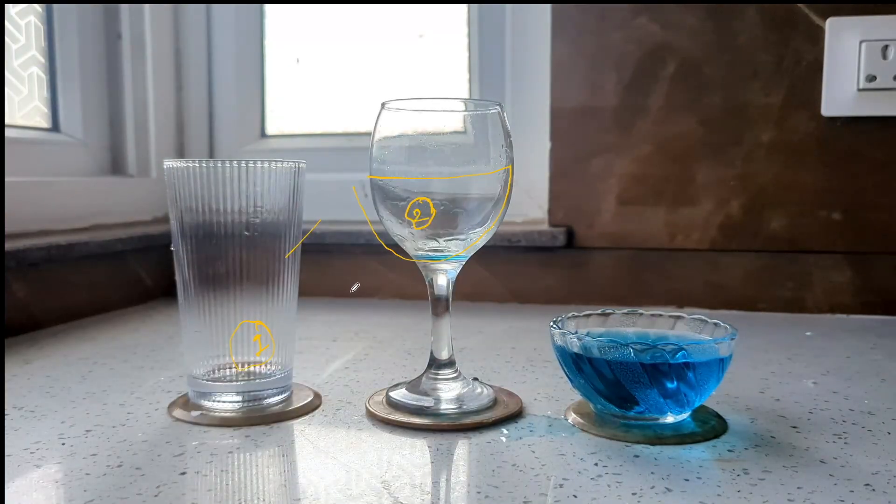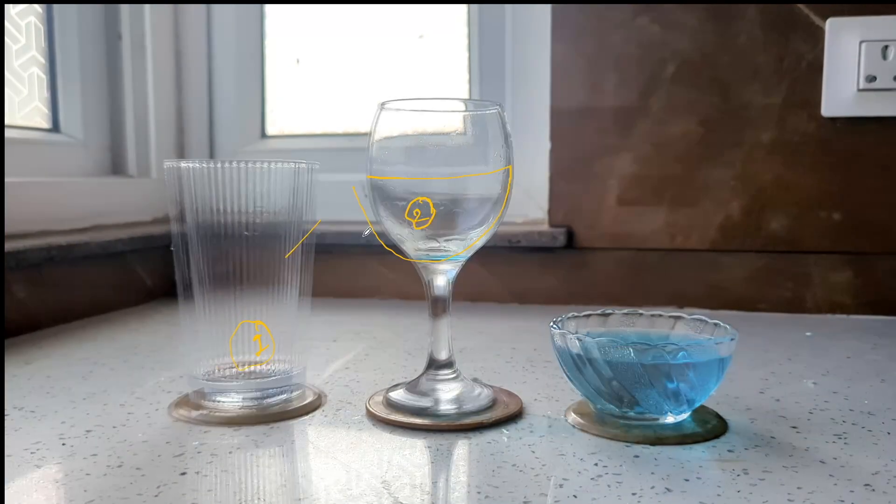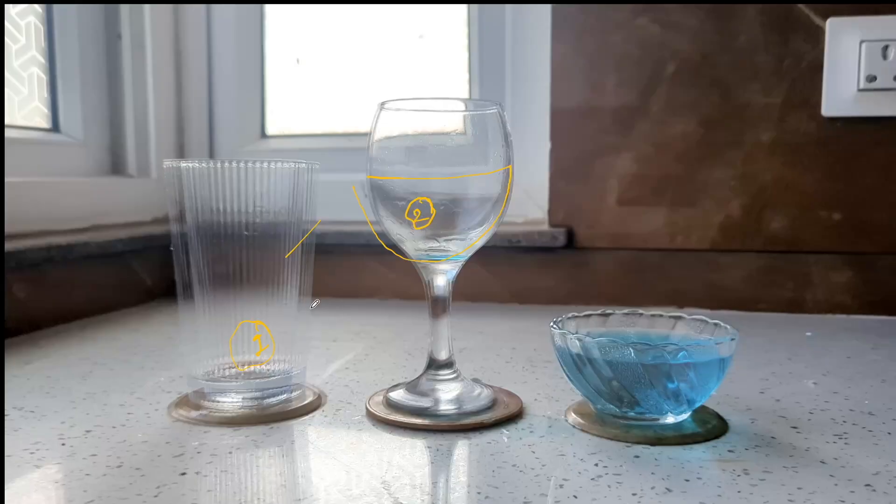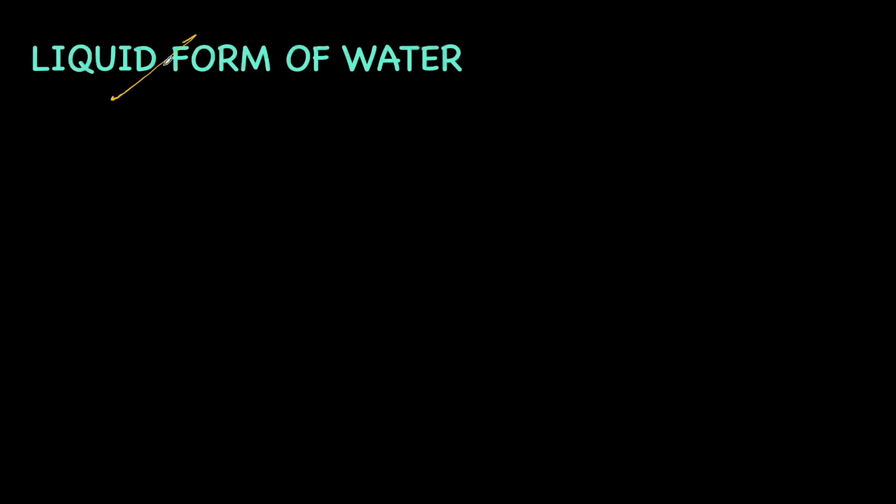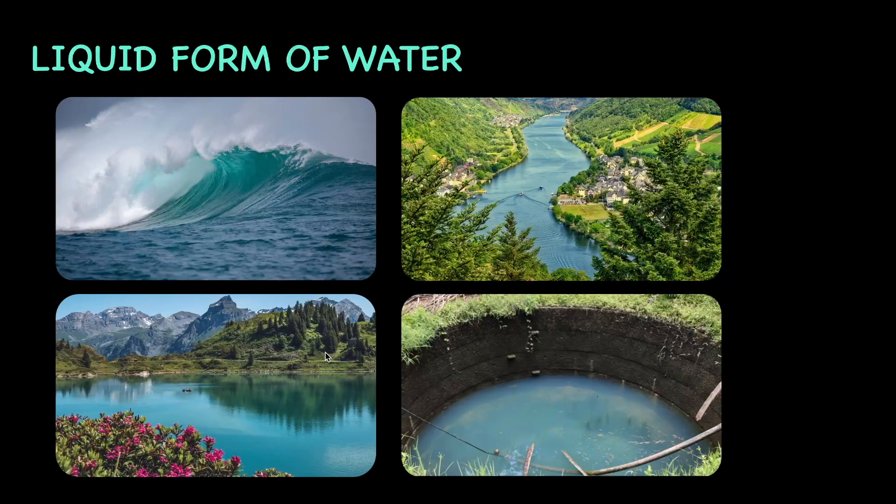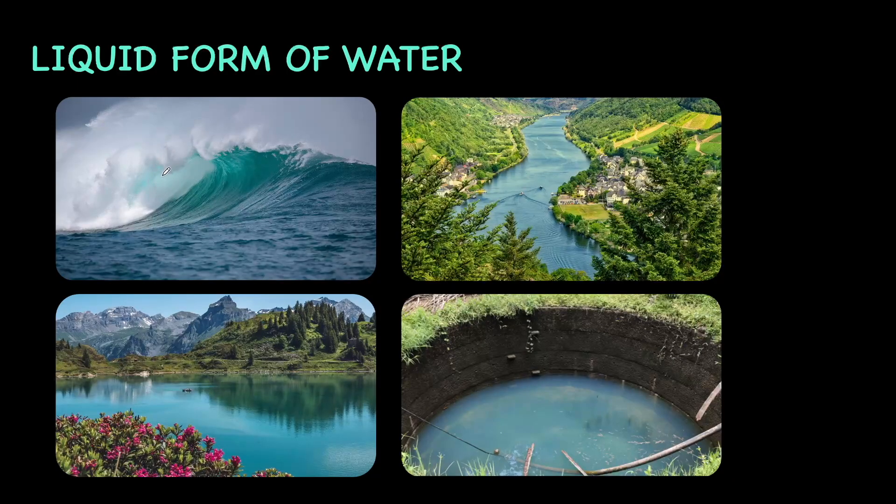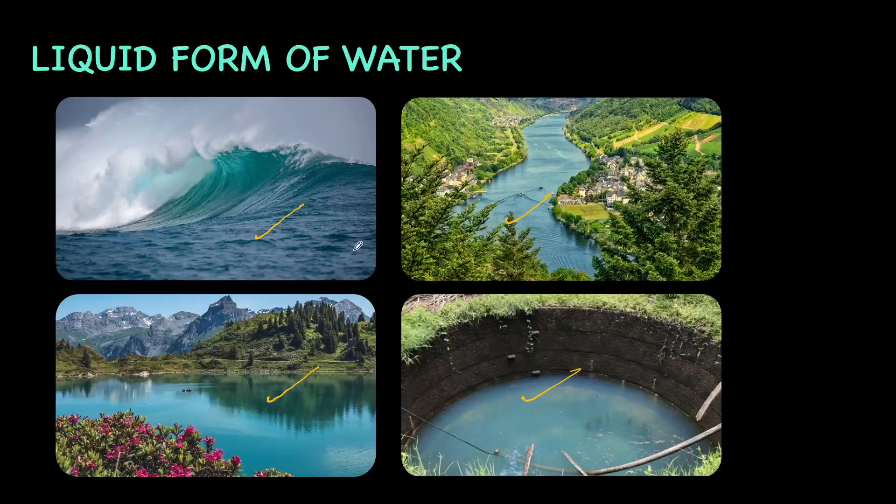I'm really sorry about the spillage there. Notice how this particular form of water that we see is not really having a fixed shape, but rather is taking up the shape of the bowl that we're putting it in. This form that we see right here is called the liquid form. And in nature, you see water as liquid everywhere, in our oceans, rivers, in the lakes, and even in the groundwater. This is the form that we drink, we swim in, we bathe, and we use every day.